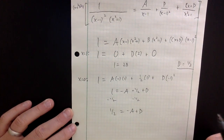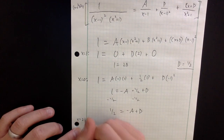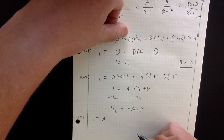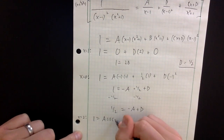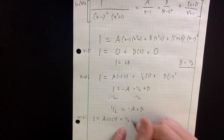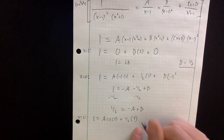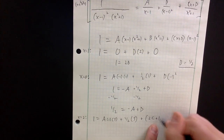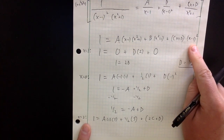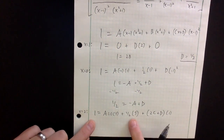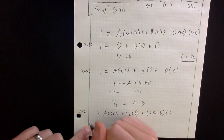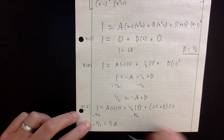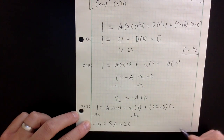I'll plug in x equals 2. So 1 equals A times 1 times 5, plus B (which is one half) times 5, plus (2C plus D) times 1. That gives 5A plus five halves plus 2C plus D. Subtracting five halves from both sides: minus three halves equals 5A plus 2C plus D. This is equation two.